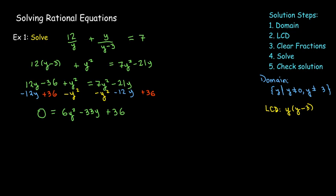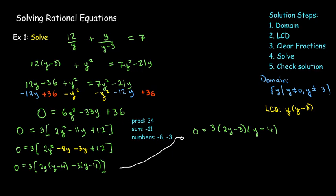Now I'm working with much smaller numbers. To factor 2y squared minus 11y plus 12, I'll need two numbers that multiply to make 24 and add to make negative 11. Those numbers would be negative 8 and negative 3. So the negative 11y is going to be written as negative 8y and then negative 3y, and I'll use factoring by grouping to get the final factorization 3 times the binomial 2y minus 3 times y minus 4 equals 0, and that's going to give me 2 solutions: y equals 3 halves and y equals 4. Now both of those are in the domain, so nothing gets rejected.